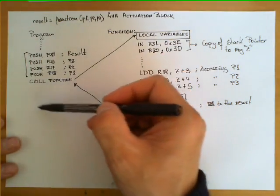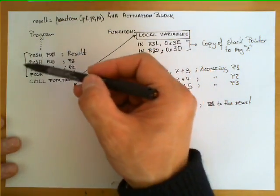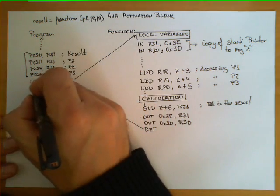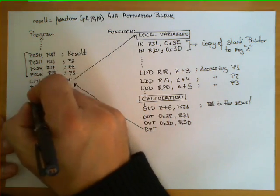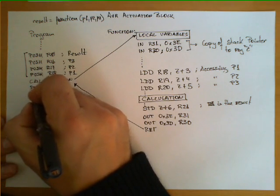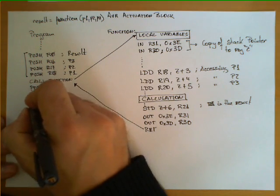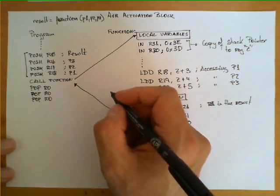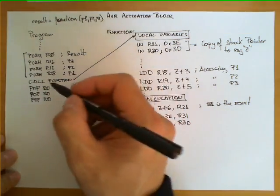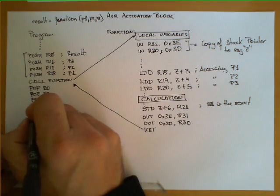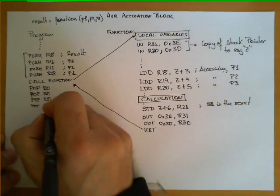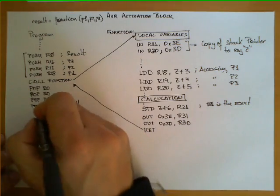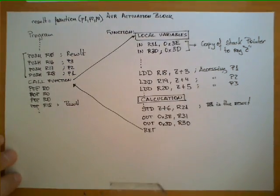Following the CALL, what I need to do is remove the three parameters from the stack. I achieve that with three POP R0 instructions. And finally, I access the result with another POP instruction — POP R18 — which gives me the result. Then I would keep making my computation.